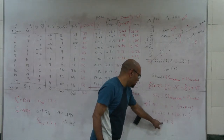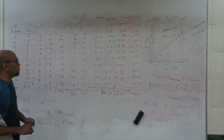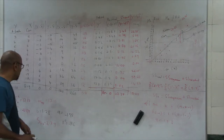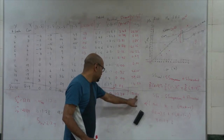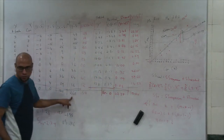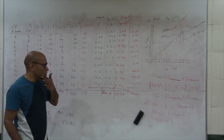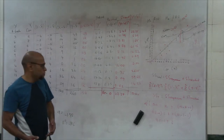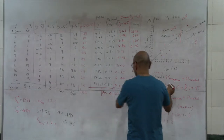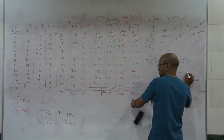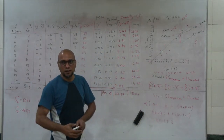Degrees of freedom associated with regression is 1, total degrees of freedom is 9 — so 9 equals 1 plus 8. We can verify numerically: sum of squares total equals sum of squares regression plus sum of squares residual, which for us is 260 equals 197.623 plus 62.37. Adding those gives 260, with some rounding error.